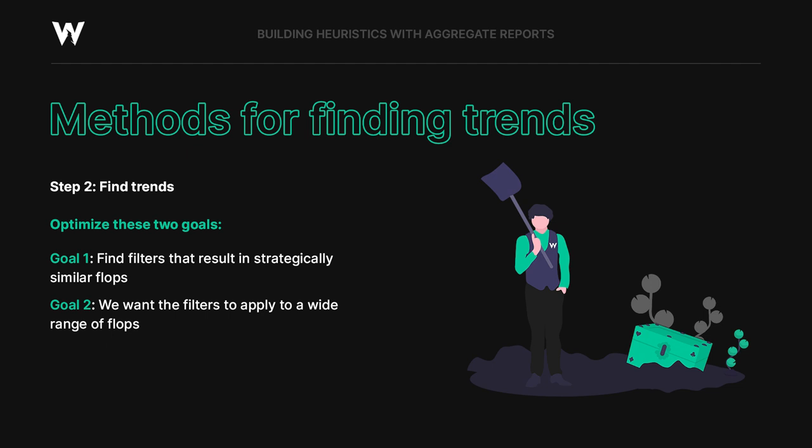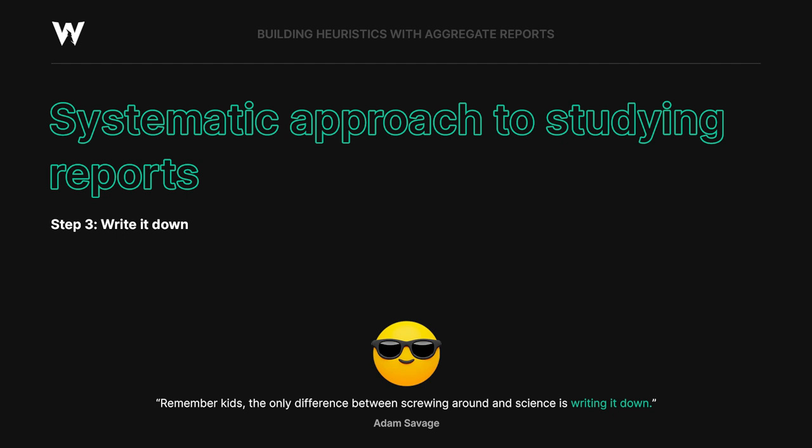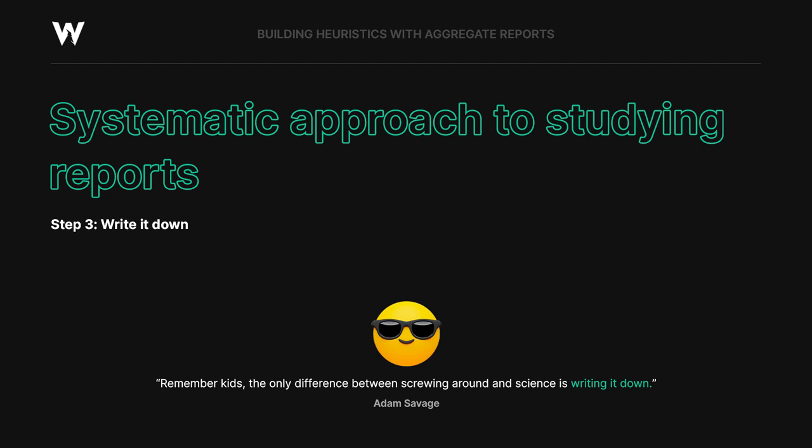Step three, we're going to write it down. The only difference between screwing around and science is writing it down — quote by Adam Savage. I'm going to show you a systematic approach to studying flops by recording your observations in a spreadsheet or document. I'll provide you with a template you can use, but the important thing is that you're trying to build it yourself. I'm not going to give you the heuristics — I'm going to teach you how to find them yourselves.